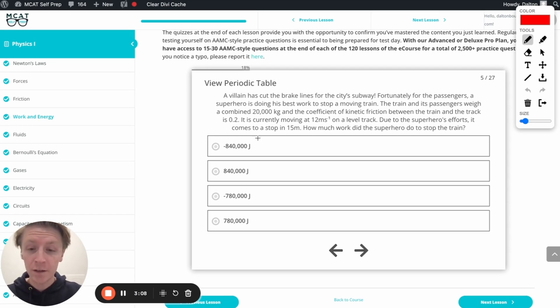All right, looking at all the numbers here, it looks like we know the mass of the train. That's good to know. We know the coefficient of kinetic friction for the train. Perfect.